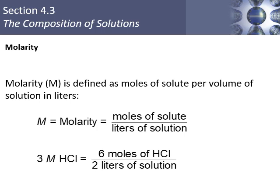Molarity is the number of moles of solute per liter of solution. For example, if you put 20 grams of NaCl in a liter of water, divide 20 by NaCl's molar mass — which is 23 plus 35.5, or 58.5 — and that gives you the number of moles of NaCl. Dividing by one liter gives you roughly 0.35 moles per liter, so the molarity would be 0.35 M. If you had 6 moles of HCl dissolved in 2 liters of solution, you divide 6 by 2 to get 3 moles per liter — written as 3 M, abbreviated with a capital M.